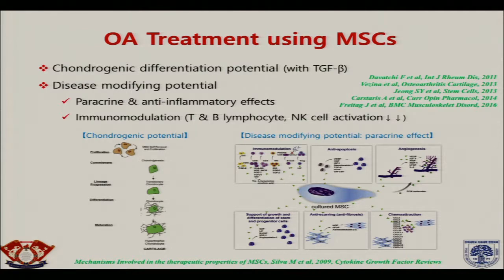In osteoarthritis, we may use mesenchymal stem cells. There are two big mechanisms. The first mechanism is that stem cells may induce chondrogenic differentiation potential with TGF-beta. The other mechanism is immune modulation — stem cells can induce good cytokines and growth factors, so immunologic modulation is another key mechanism of treatment for osteoarthritis.